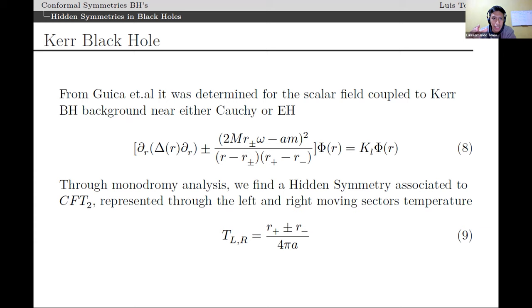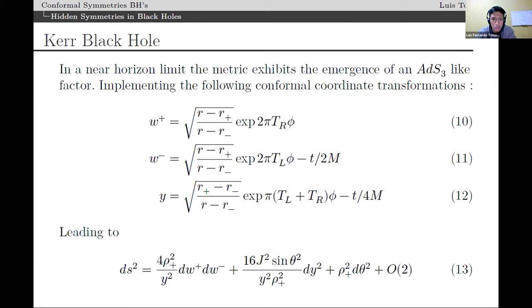I will not go very much into the details of how this computation is done, but again doing a near horizon expansion of either the metric in this case or the near horizon analysis of the Klein-Gordon equation, it is possible to identify the temperature of the conformal dual of this gravitational system. So far so good.